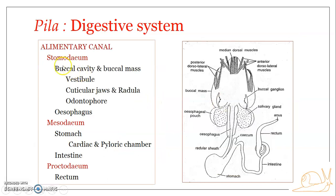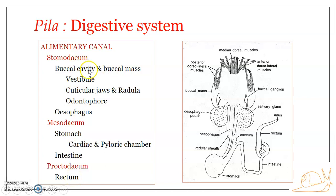The foregut is otherwise referred to as the stomodeum, the midgut as the mesodeum, and the hindgut as the proctodeum. The stomodeum includes the buccal cavity, the buccal mass, and the esophagus. The mesodeum — the midgut — includes the stomach and the intestine. The proctodeum consists of the rectum.